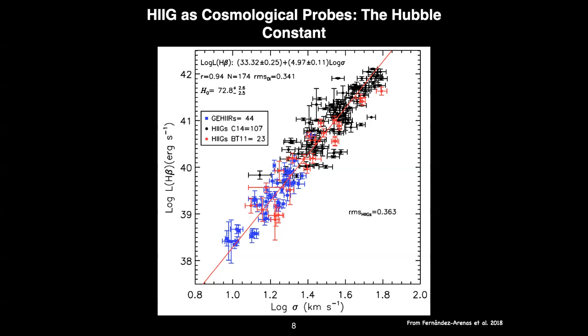With that methodology, we got an H0 of around 72.8, with errors of plus 2.6, minus 2.5. At that time, this was relatively similar to the results from supernovae 1a. The error bars are evidently larger than the supernovae 1a results, but we have much fewer objects. However, I will not concentrate only on H0 — I will try to get to the other cosmological parameters.